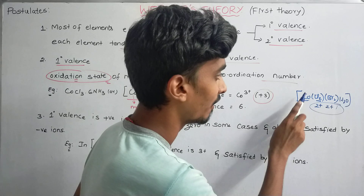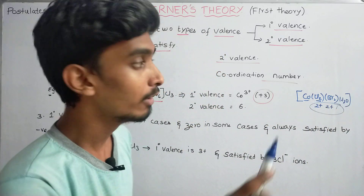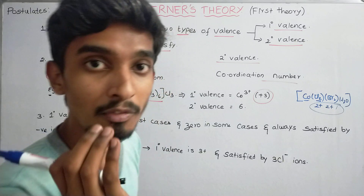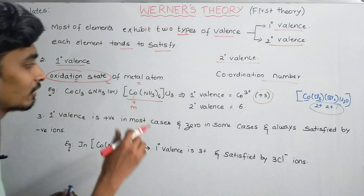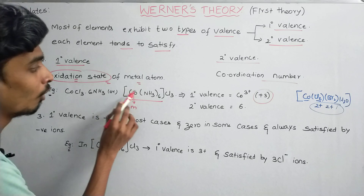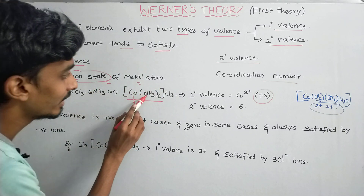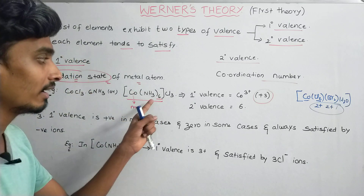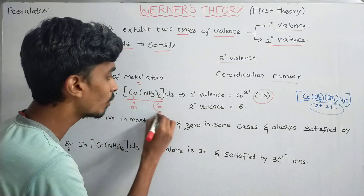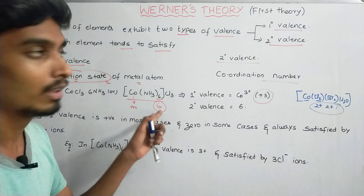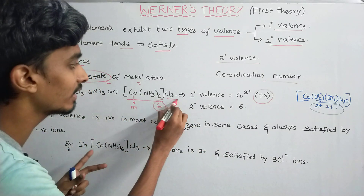The metal is inside the bracket, and we count how many ligands are attached to it. The number of ligands equals the coordination number. For example, if CO appears 6 times around the metal, there are 6 ligands, so the coordination number of that complex is 6.